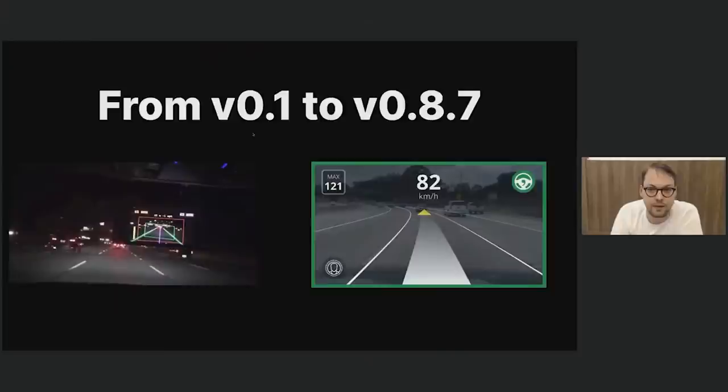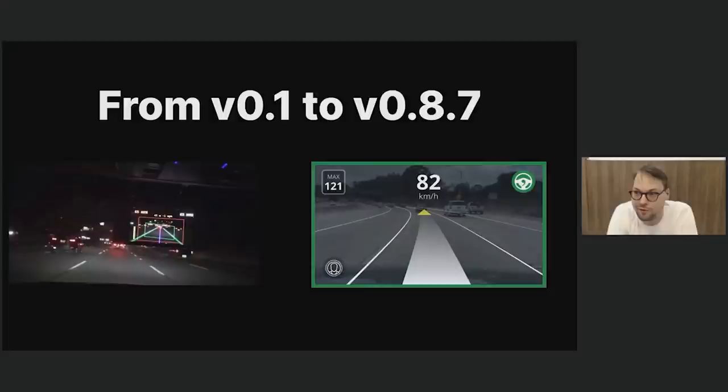This shows us very nicely how far we've come from version 0.1 to version 0.8.7. Sometimes progress feels slow, but it's always good to take a step back and see how far we've come. If we can get this much out of a 2016-era smartphone, that proves our point that this is just a software problem — and if we just keep chipping away at the software, it's just going to keep getting better and better.